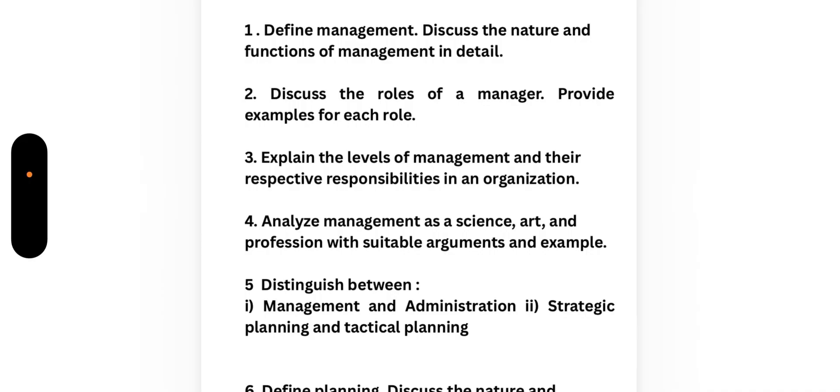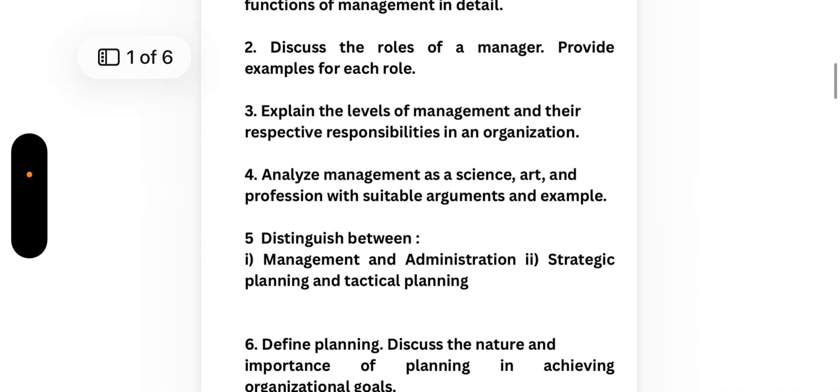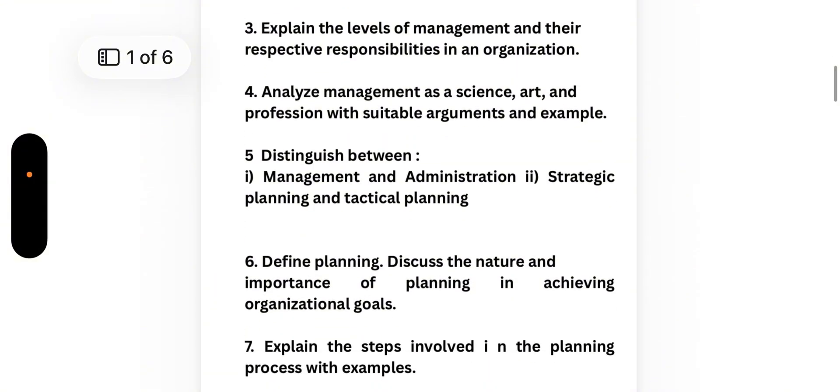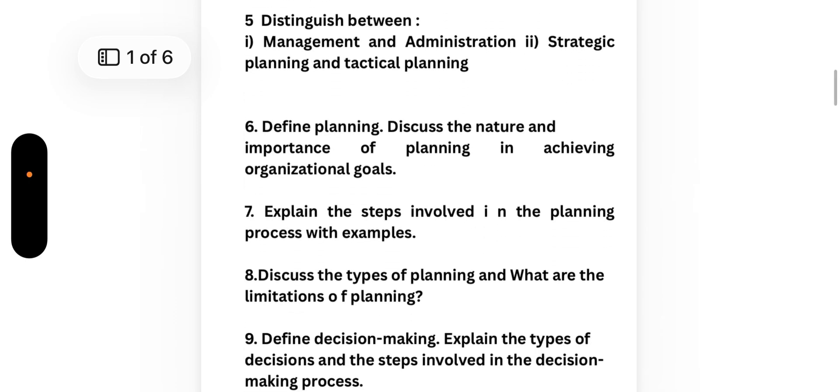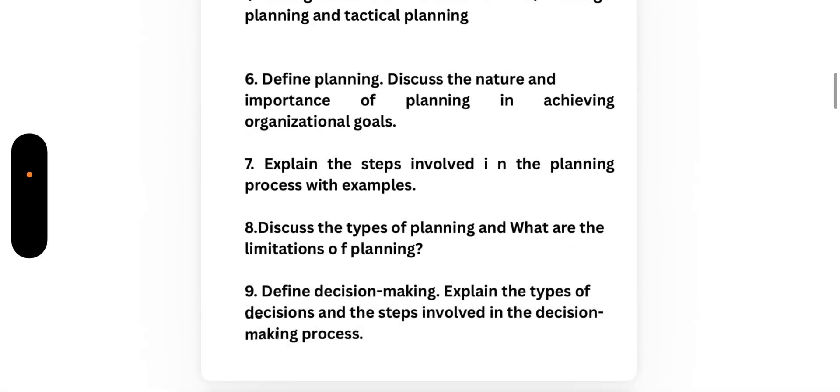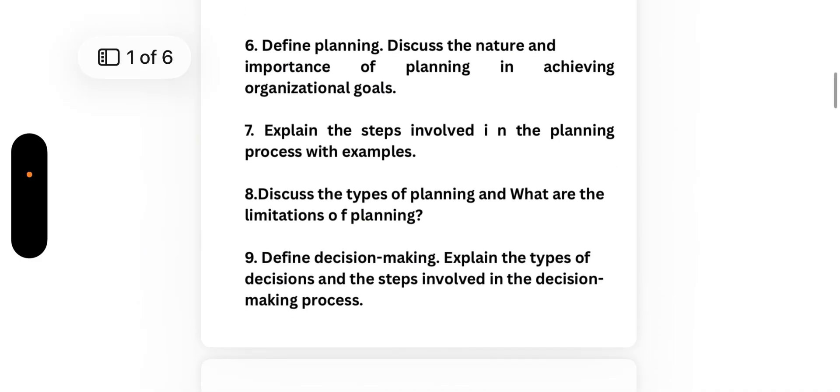Number 5: Distinguish between management and administration. Number 6: Strategic planning and tactical planning. Number 7: Define planning, discuss the nature and importance of planning in achieving organizational goals. Explain the steps involved in the planning process with examples. Discuss the types of planning and the limitations of planning. Define decision making, explain the types of decisions and steps involved in the decision making process. This is all about Module 1.